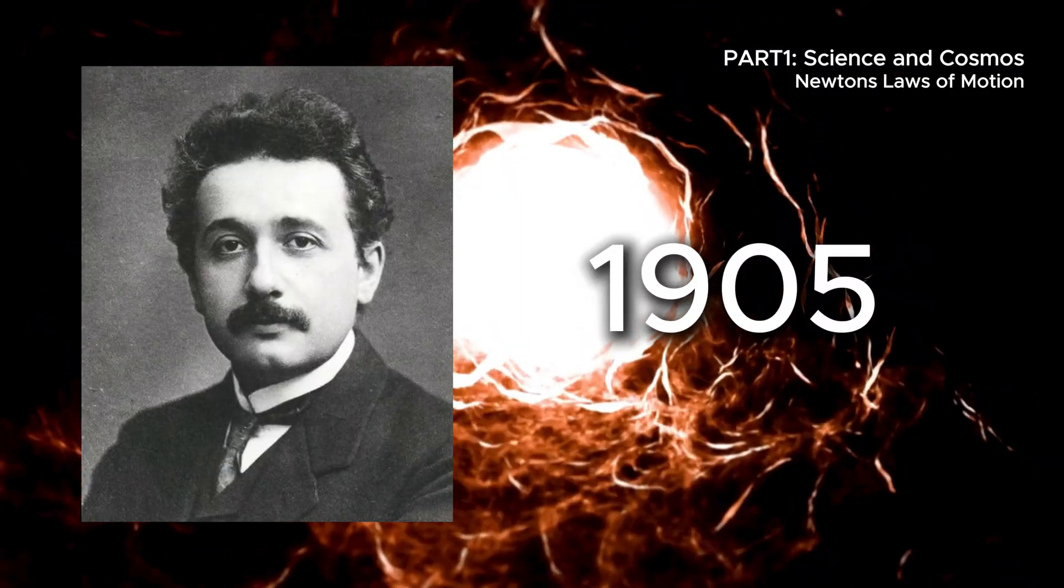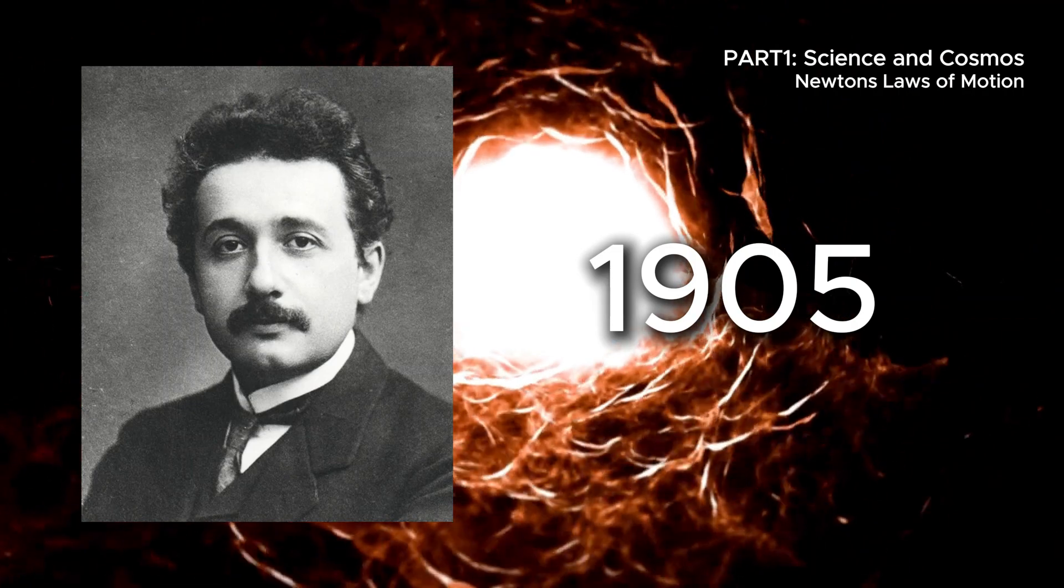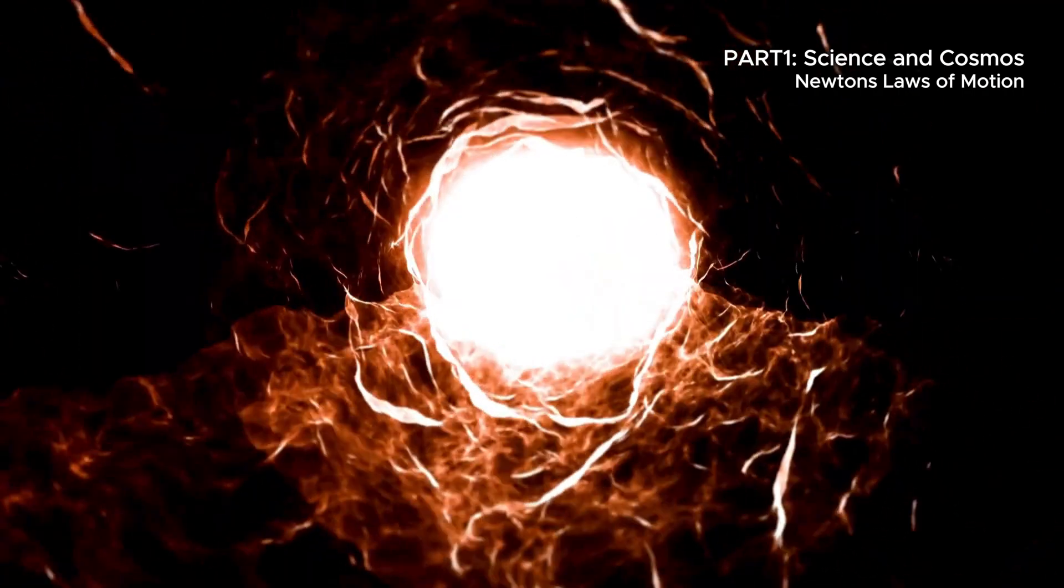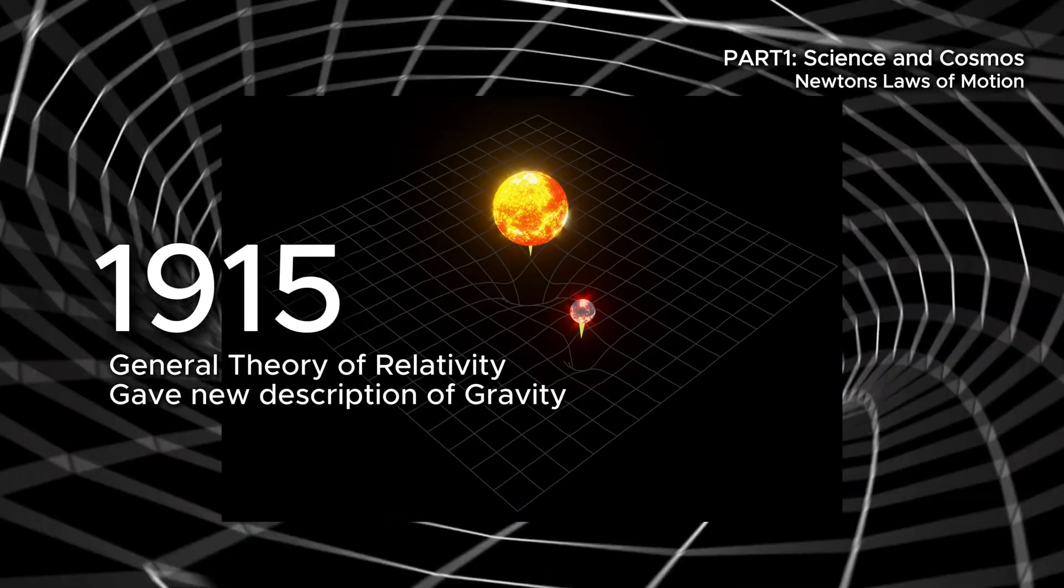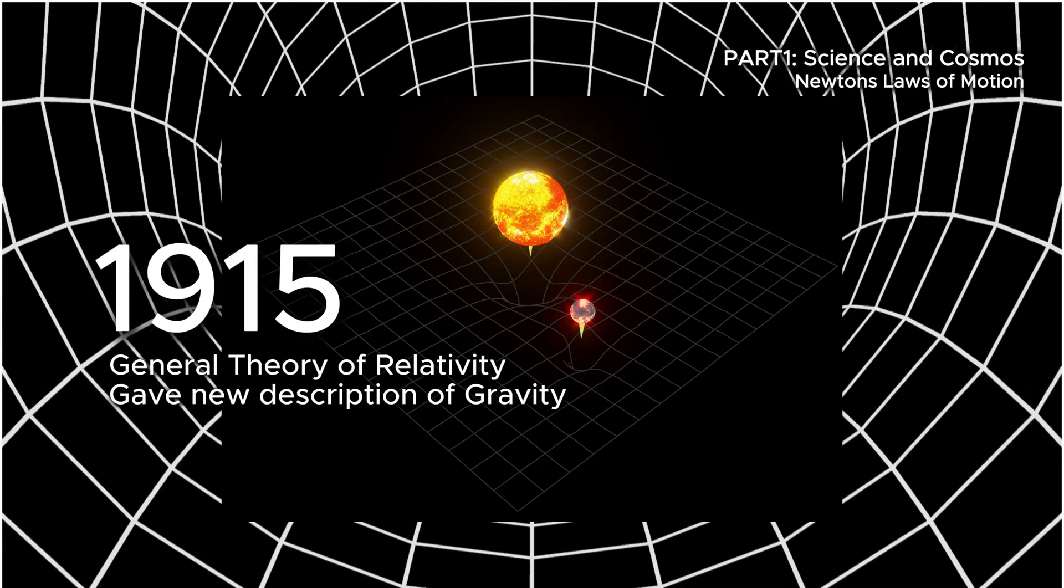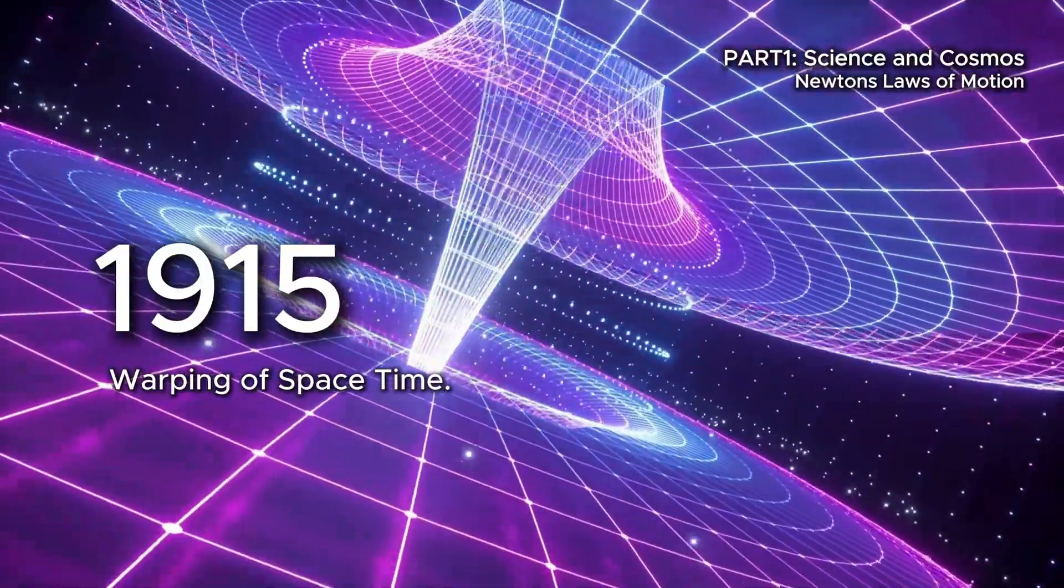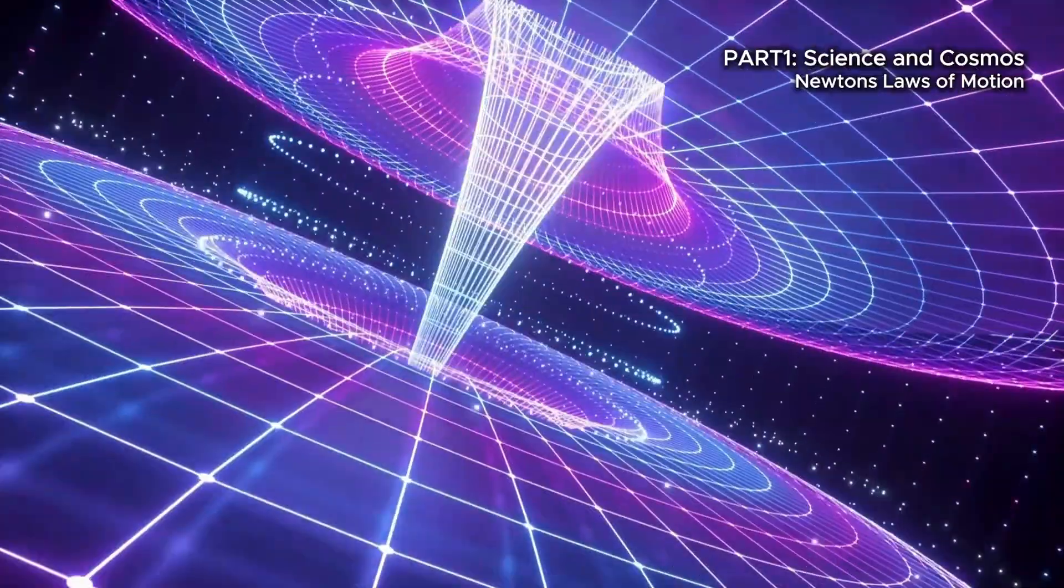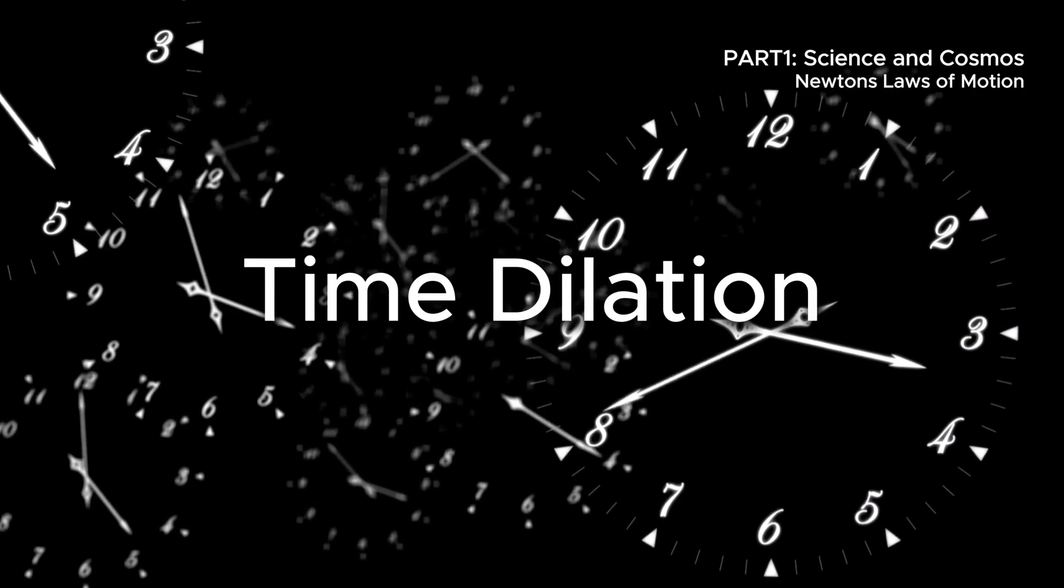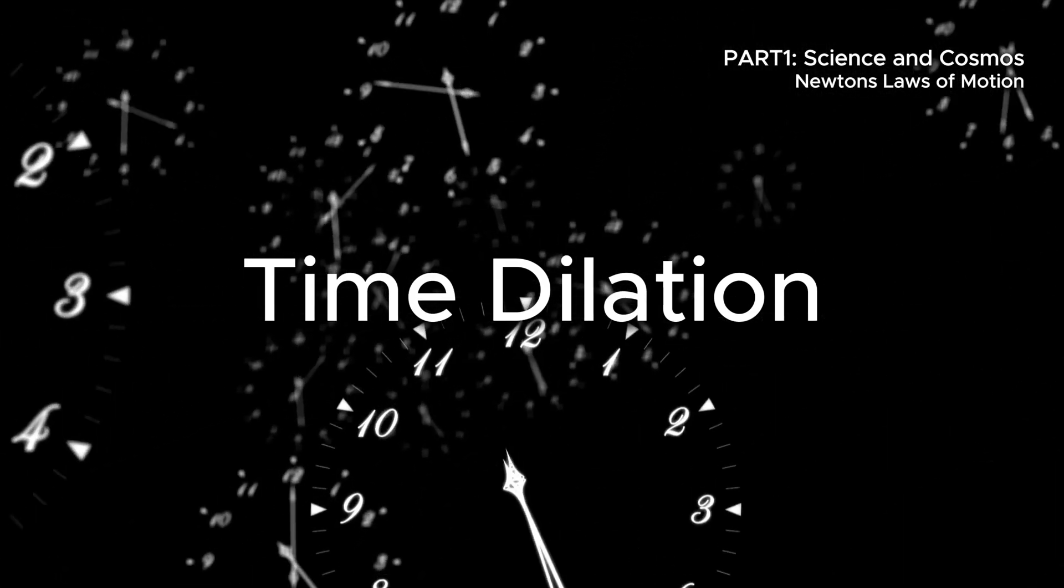In 1905, Albert Einstein introduced his theory of special relativity, redefining space and time not as fixed backdrops, but as interwoven fabric. Then, in 1915, his general theory of relativity replaced Newton's idea of gravity as a force with something deeper. Gravity was the warping of space-time itself, caused by mass and energy. And here came one of the most profound truths of all. Time is not absolute. It runs slower near massive objects and faster when we move at high speeds.